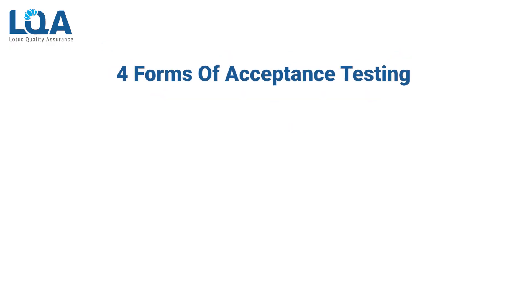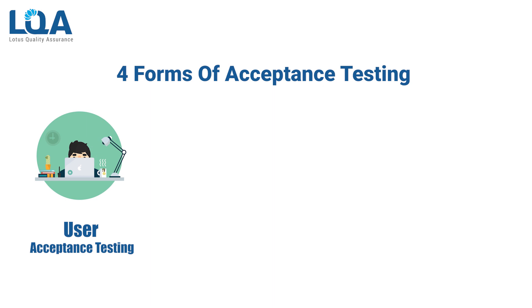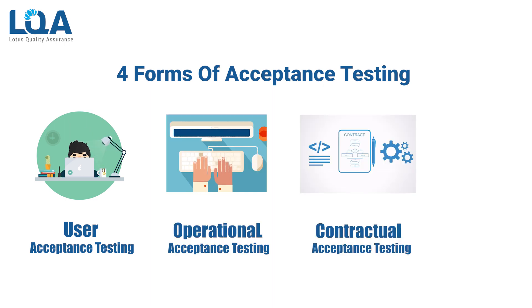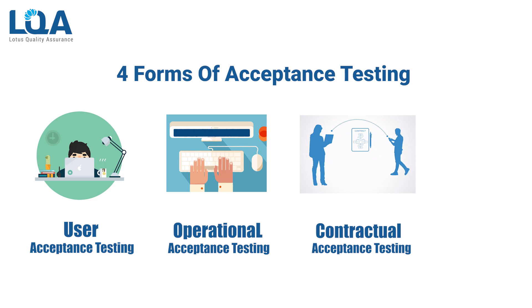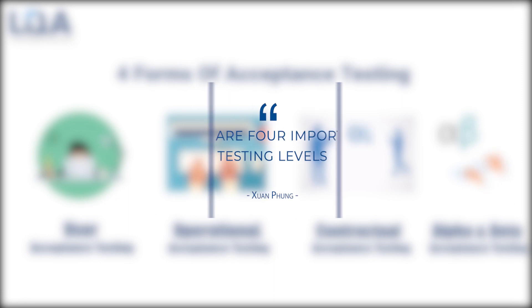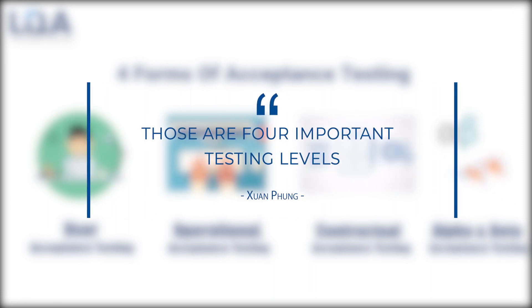Normally, there are four common forms of acceptance testing: user acceptance testing, operational acceptance testing, contractor and regulator acceptance testing, and alpha and beta testing. These testing levels are all very important.